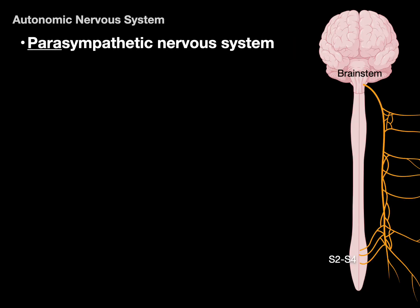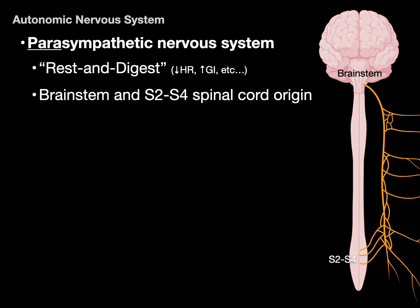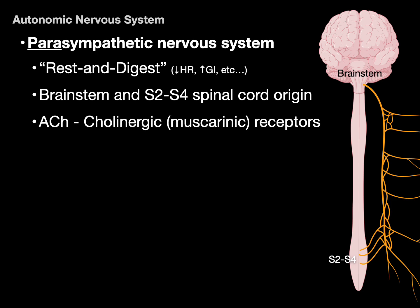The parasympathetic nervous system is the rest-and-digest system. Resting means decreased heart rate and decreased respiratory rate; digest means increased GI motility and secretions, and so forth. Parasympathetic pathways arise in the brainstem — midbrain, pons, medulla — or the S2, S3, S4 spinal cord segments. This is why it's also called craniosacral — cranial referring to the brainstem, sacral to that region of the spinal cord. These pathways use acetylcholine as the neurotransmitter that binds to muscarinic cholinergic receptors.